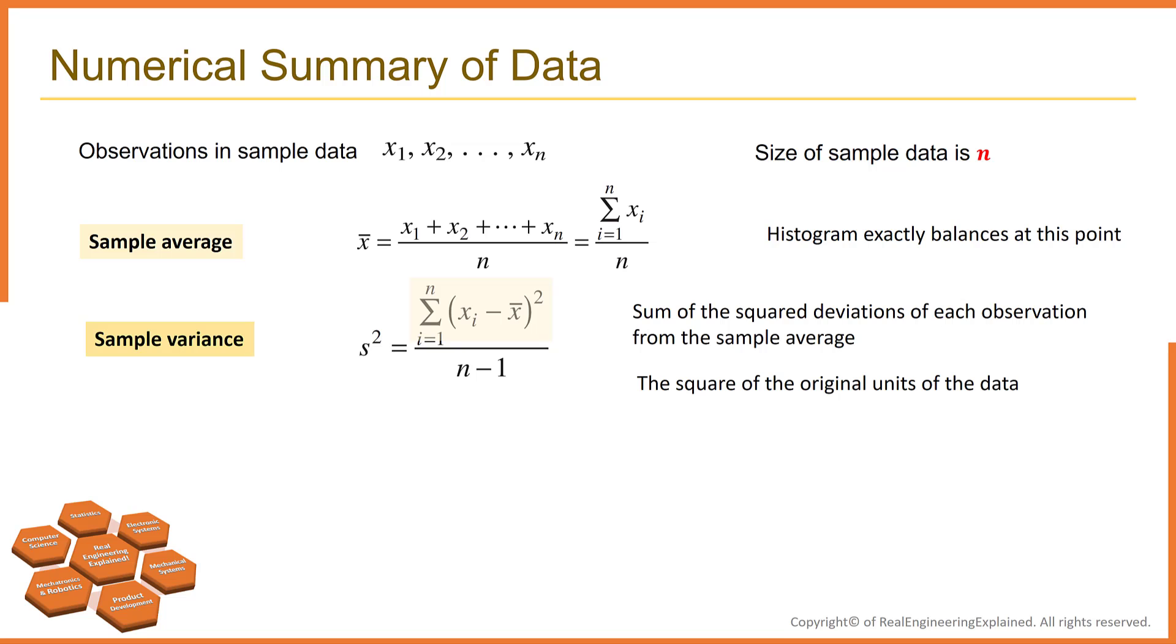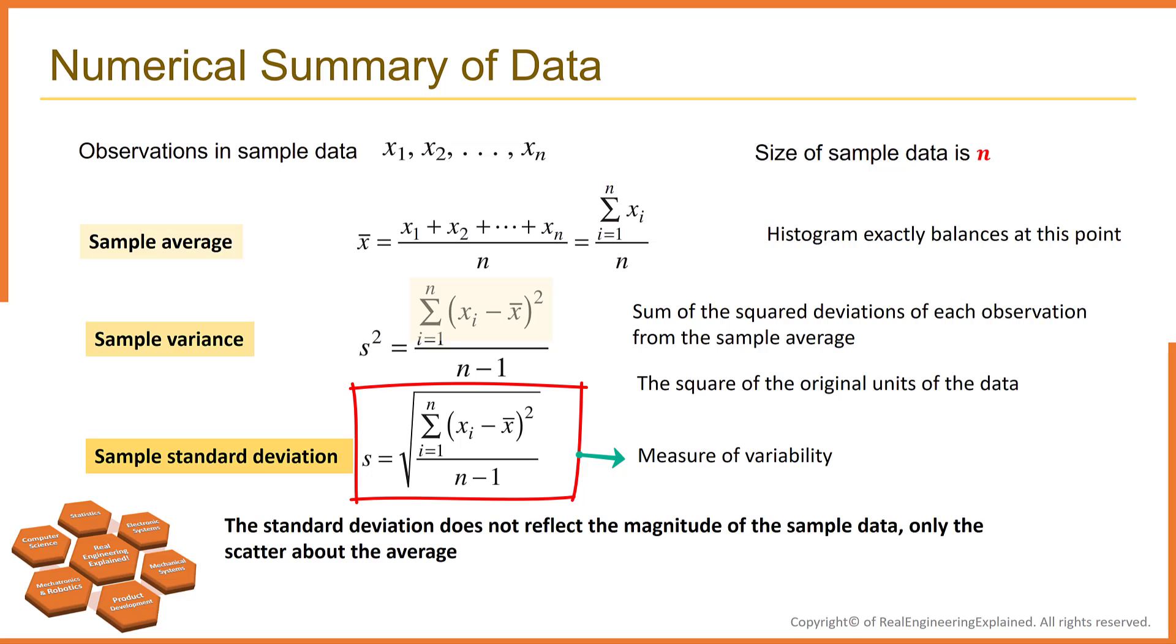The variability in the sample data is measured by the sample variance. Note that the sample variance is simply the sum of squared deviation of each observation from the sample average, divided by the sample size minus 1. Generally, the larger is the sample variance, the greater is the variability in the sample data. The unit of sample variance s-square is the square of original units of data. So, since it is often inconvenient and awkward to interpret, we usually prefer to use the square root of s-square, which is called sample standard deviation s, as a measure of variability. Please note that the standard deviation doesn't reflect the magnitude of sample data. Only gives information about the scatter of data about the average.